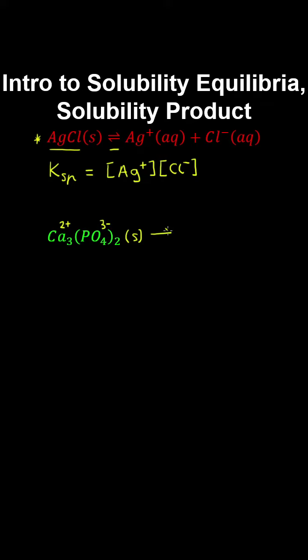When this salt dissociates, we have calcium and phosphate ions in an aqueous solution. We need to ensure that this equation is balanced on both sides, and the solubility product is equal to the concentration of the calcium ions raised to the stoichiometric coefficient, and we multiply that by the concentration of the phosphate ions raised to the stoichiometric coefficient.